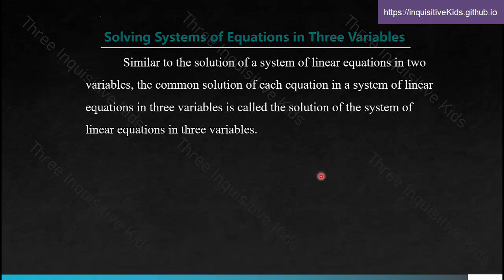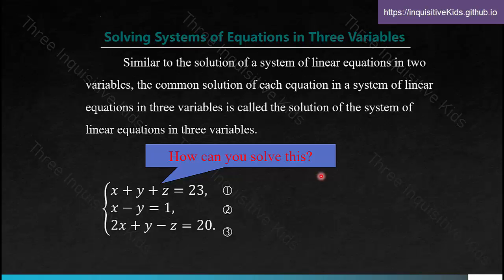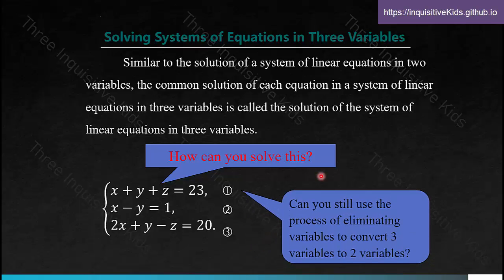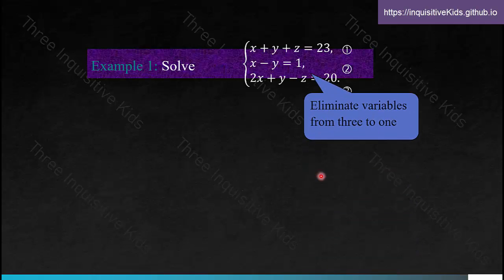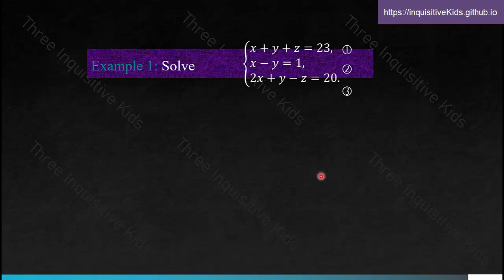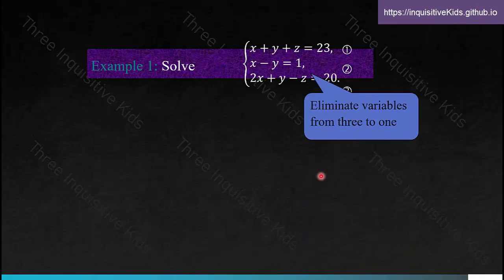Solving systems of equations in three variables: similar to the solution of a system of linear equations in two variables, the common solution of each equation in a system of linear equations in three variables is called the solution to the system. So a group of three values that satisfy all three equations is the solution. We can still use elimination — eliminating variables to convert three variables to two, and then from two to one. Let's solve this together. We have: x plus y plus z equals 23; x minus y equals 1; and 2x plus y minus z equals 20.